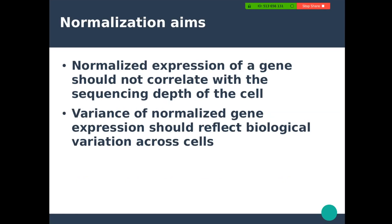The aim of normalization is to remove biases typical to single-cell data. After normalization, gene expression should not be clearly correlated with the sequencing depth of the cell. Also, the variance should mainly reflect biological variation instead of technical variation across the cells.